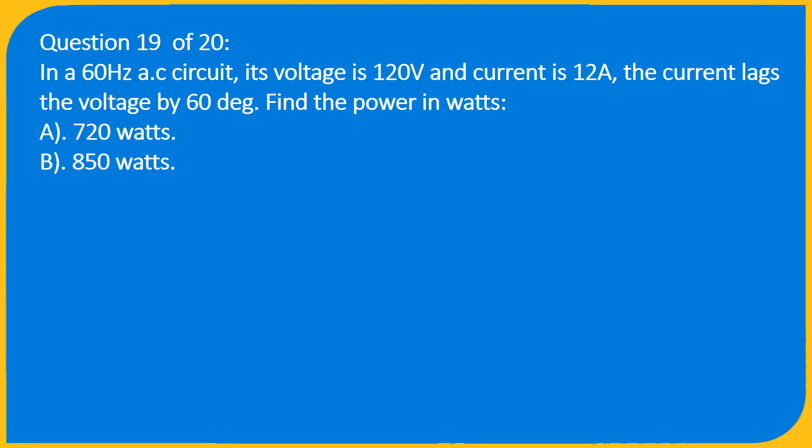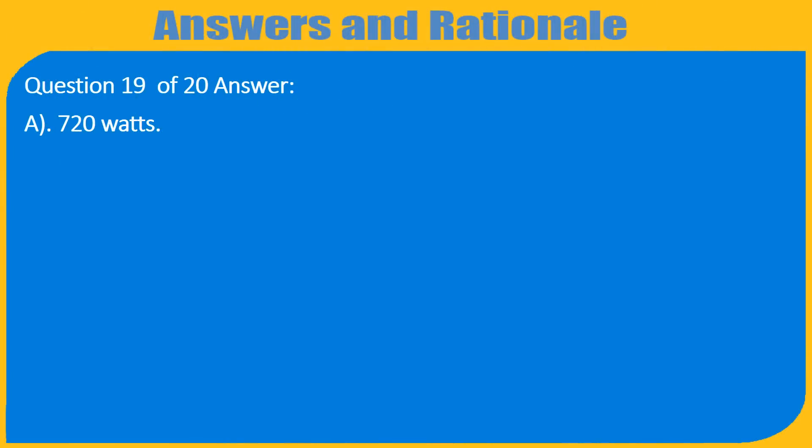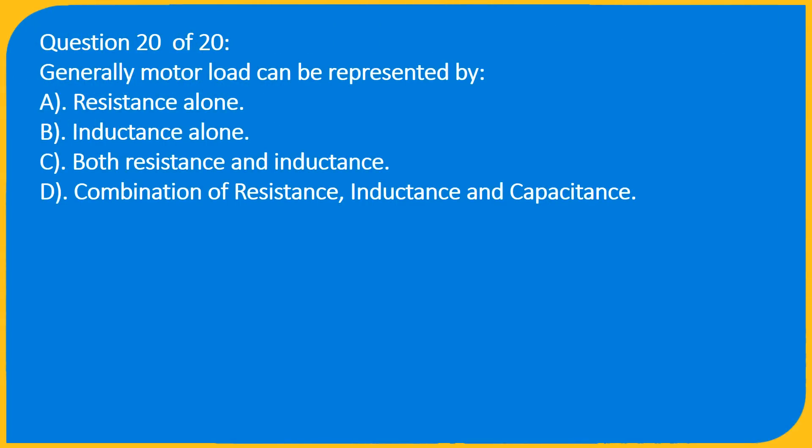Question 19 of 20: In a 60 Hz AC circuit, the voltage is 120 volts and the current is 12 A. The current lags the voltage by 60 degrees. Find the power in watts. A. 720 watts, B. 850 watts. Answer: A. 720 watts.